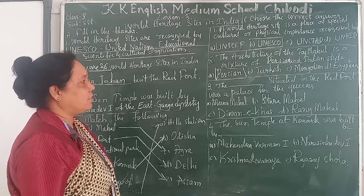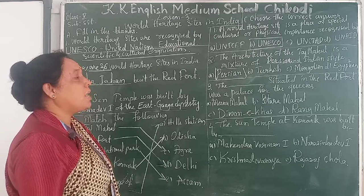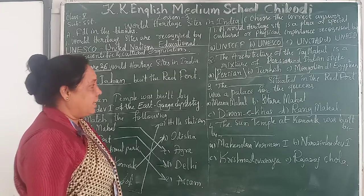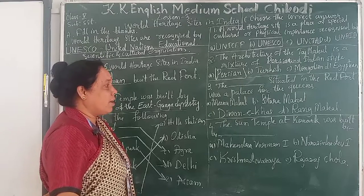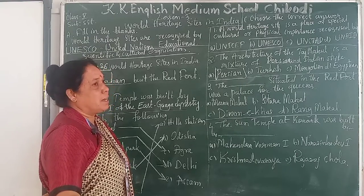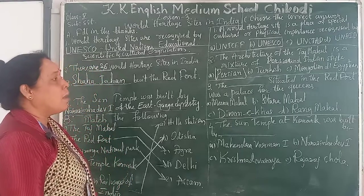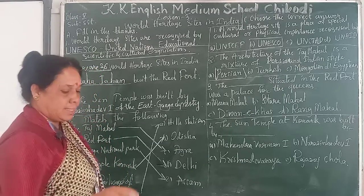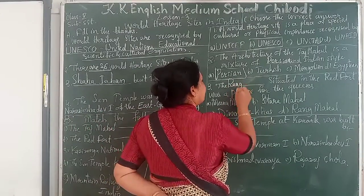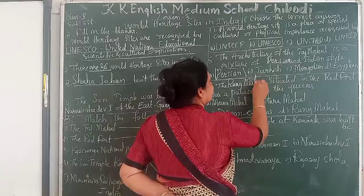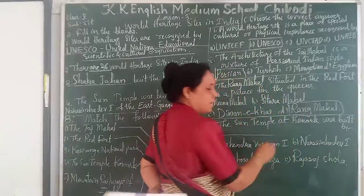Next: the dash situated in the Red Fort was a palace for queens. Options are Meena Mahal, Siddhara Mahal, Diwan-i-Khas, and Raghu Mahal. Which is situated in the Red Fort and was a palace for queens? The answer is Raja Mahal.